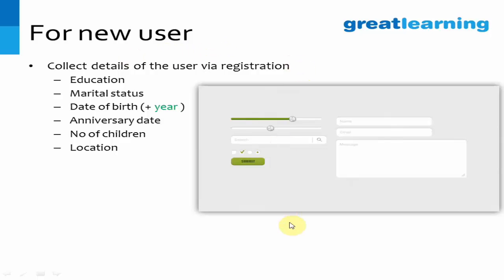For a new customer, you obviously don't have their watching pattern. So what can you do? During registration, you can collect certain information — for example, education level, marital status, date of birth including the year so you know their age, anniversary date, number of children, and location. This gives you a customer profile.